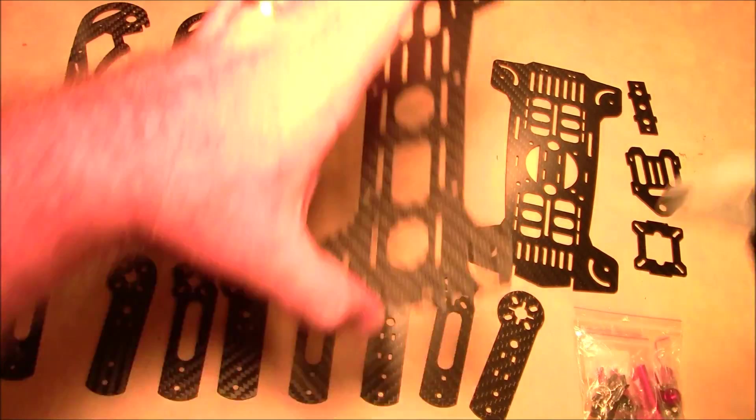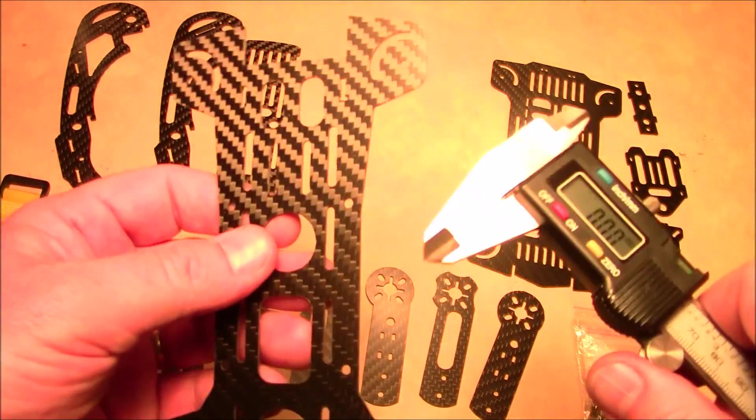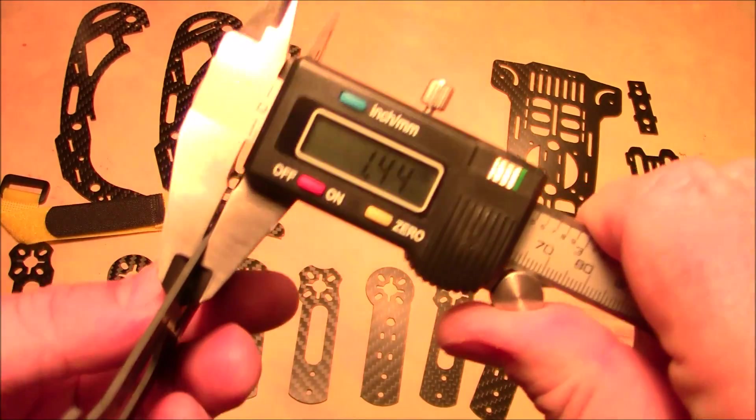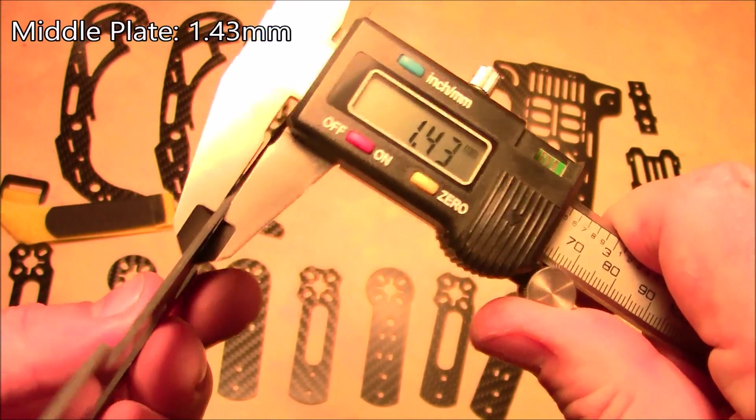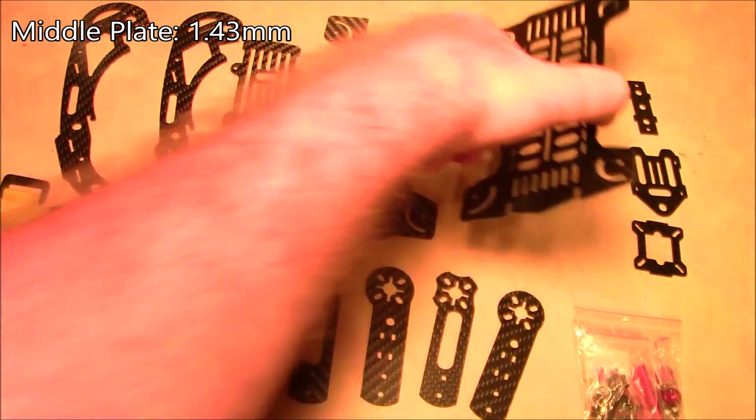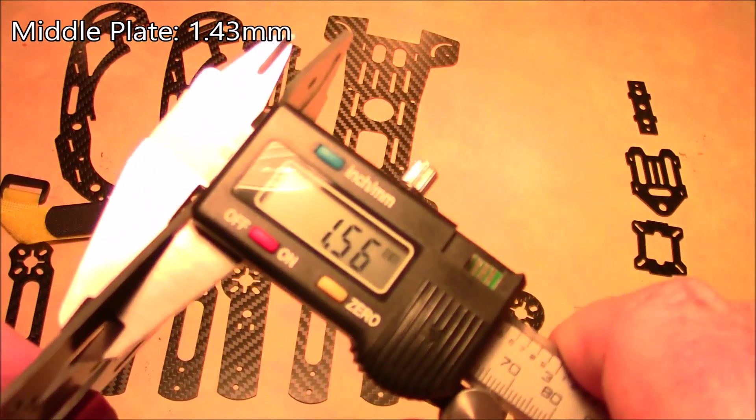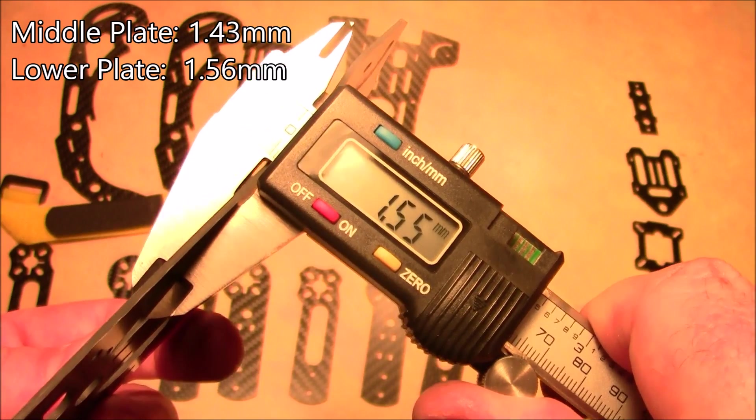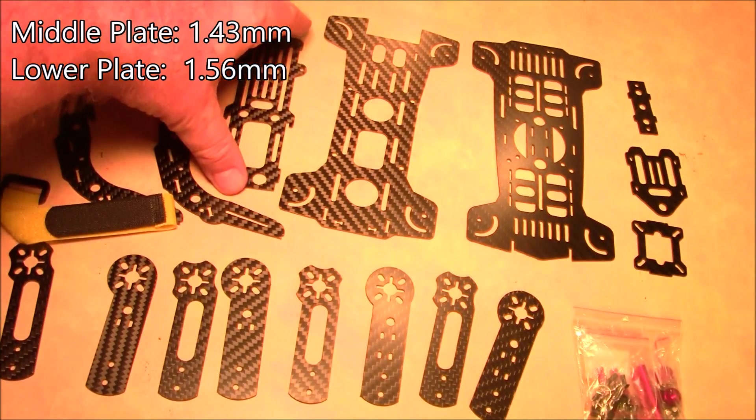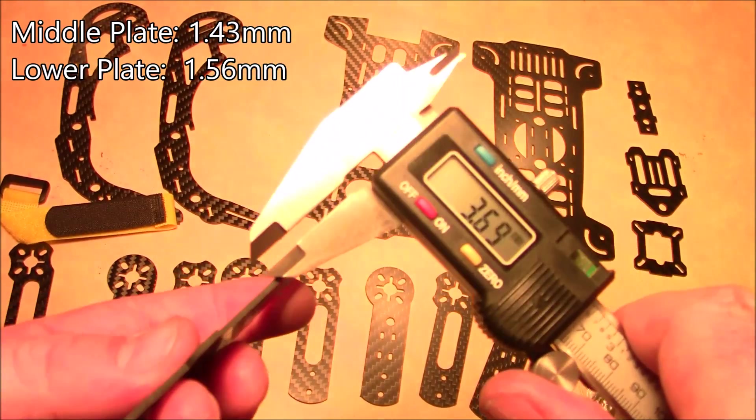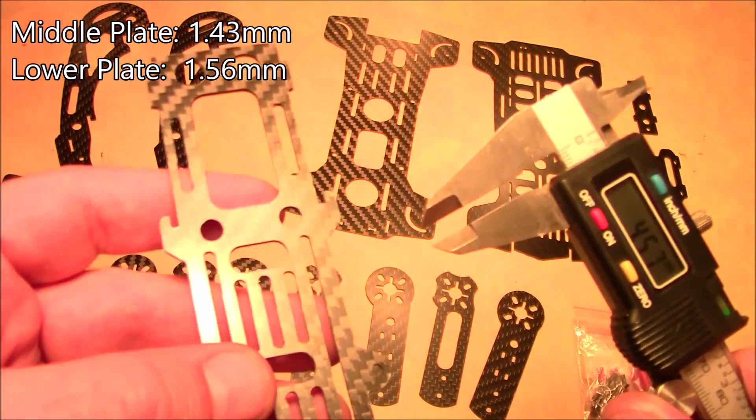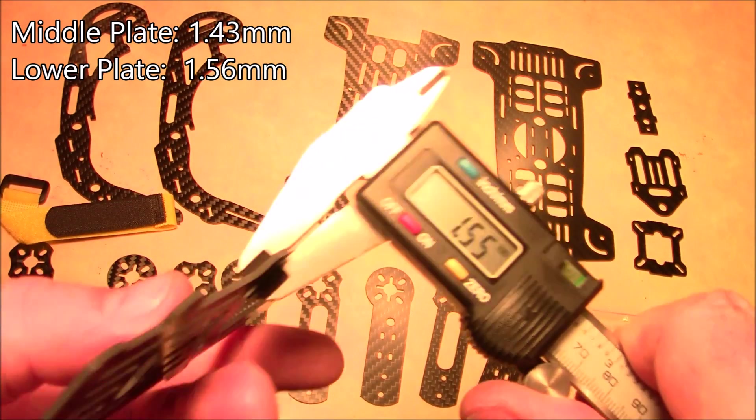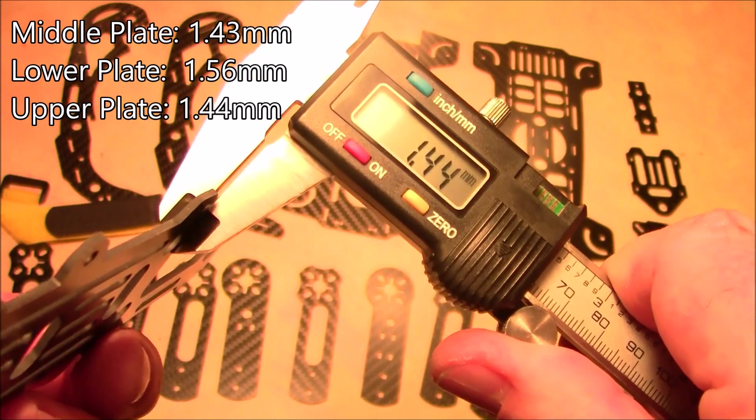So let's go ahead and measure some of these plates. Here's this one, looks like it's one of the main plates, and it comes in about 1.5 millimeters. The other middle plate comes in around 1.55 millimeters. This upper plate comes in at 1.44 millimeters.